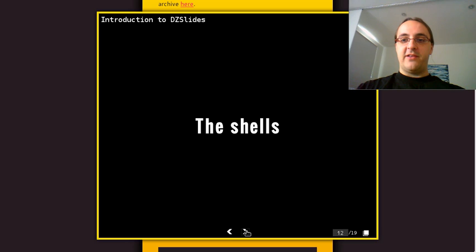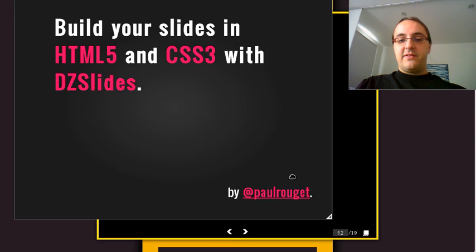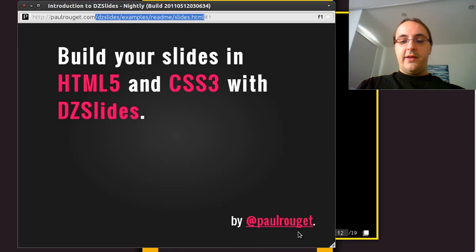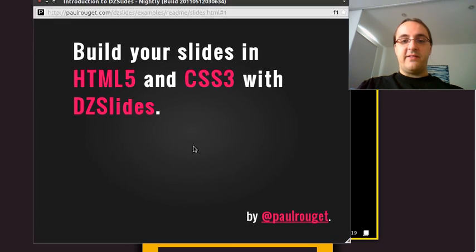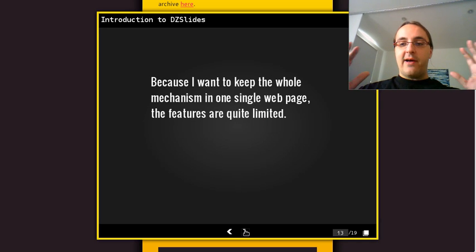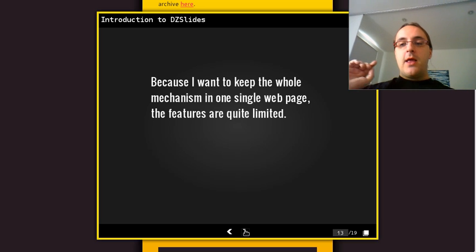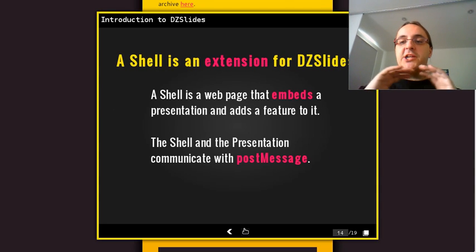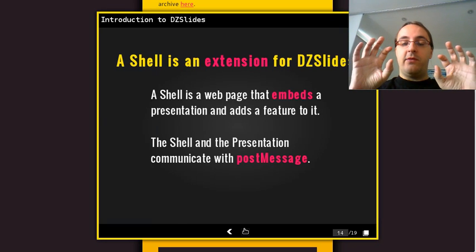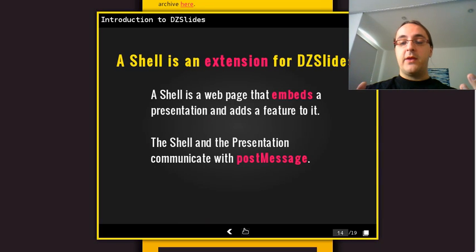Shells — what are they? If you look at the URL, you can see the slides are naked: no rows, no counter, nothing. I want to keep the slide file quite short, with the minimum inside. Shells are web pages that embed the slides through an iframe. The page embedding the slides can communicate with the slides through postMessage, so you can add features just with the page around it.